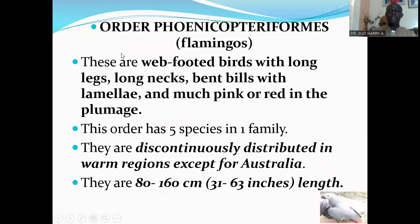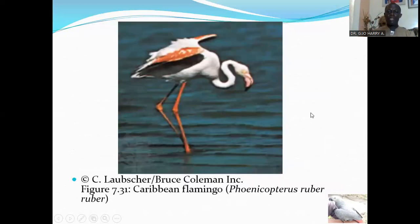The next order is Order Phoenicopteriformes, which consists of the flamingos. These are web-footed birds with long legs, long necks, bent bills with lamellae, and much pink or red plumage. This order has five species in one family. They are discontinuously distributed across regions except in Australia. They are 80 to 160 centimeters in length. Here is the Caribbean flamingo.